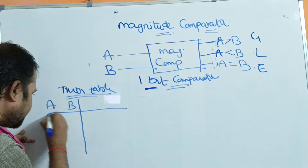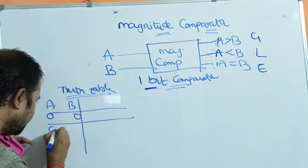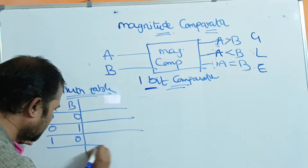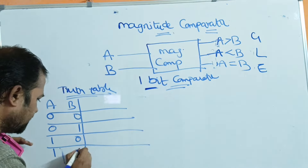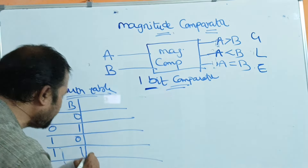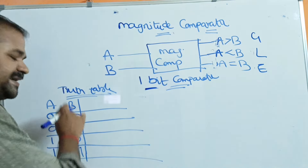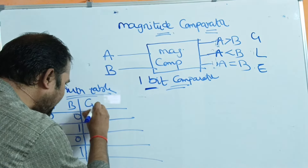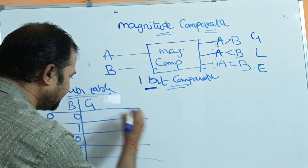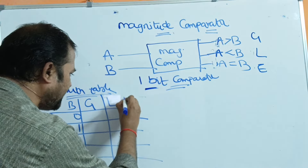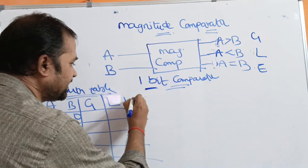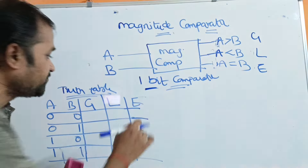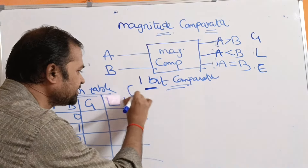The possible input combinations are 0-0, 0-1, 1-0, and 1-1. Binary number A contains only 1 bit and binary number B contains only 1 bit. The possible outputs are: greater than, denoted G; less than, denoted L; and equals to, denoted E.